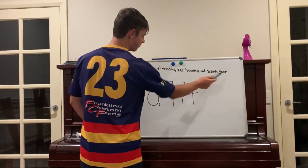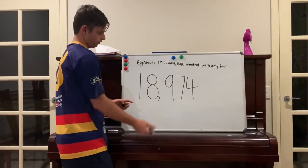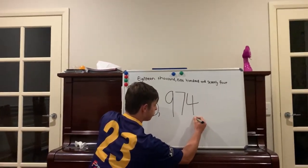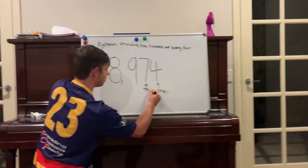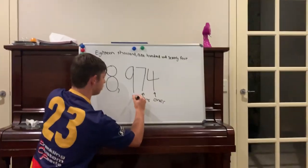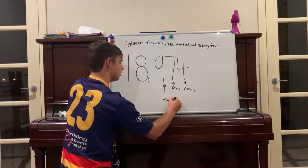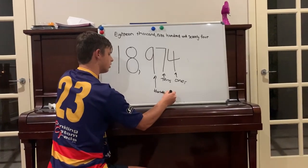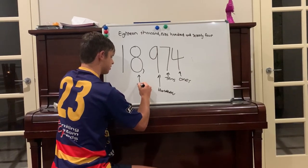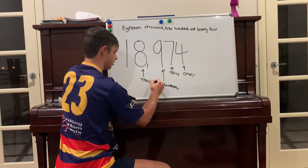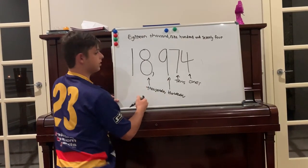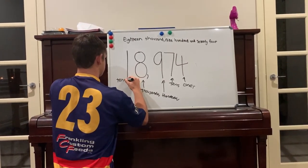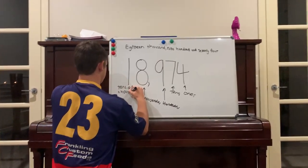18,974. For this number, the 4 is worth only 4 — it has a place value of 4, so it's in the 1s. The 7 is worth 70, so it's in the 10s. The 9 is worth 900, so it's in the 100s. The 8 is worth 8,000, so it's in the 1,000s. And the 1 in this is worth 10,000, so it's in the 10s of 1,000s.